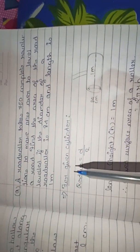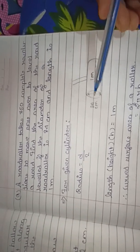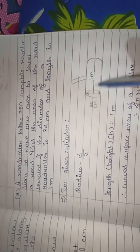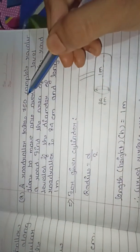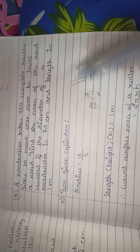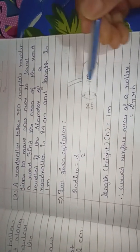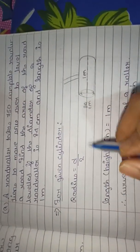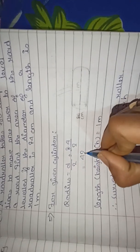We need to find the area of the road leveled. If we find the curved surface area of the cylindrical road roller and multiply it by the number of revolutions (750), we get the total area leveled. Only the curved surface touches the road — not the top and base. Radius = diameter ÷ 2 = 84 ÷ 2 = 42 centimeters.